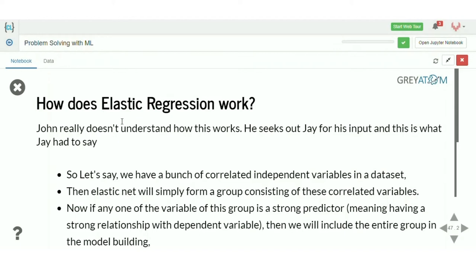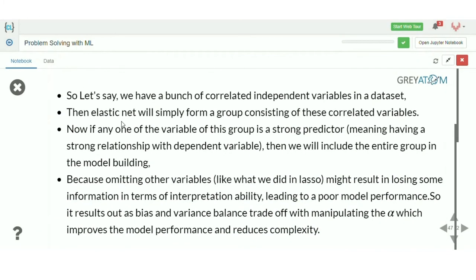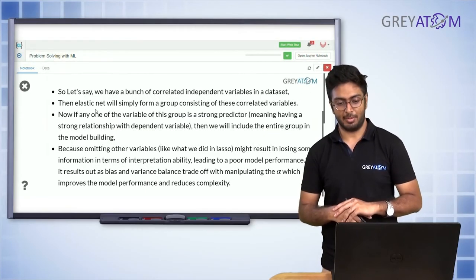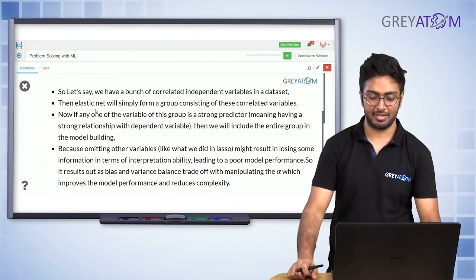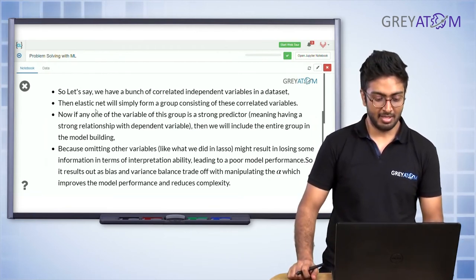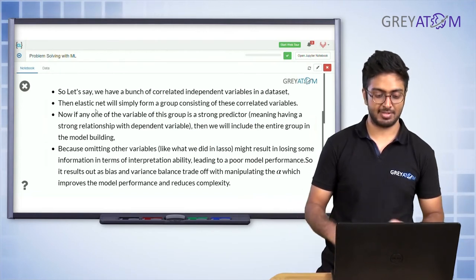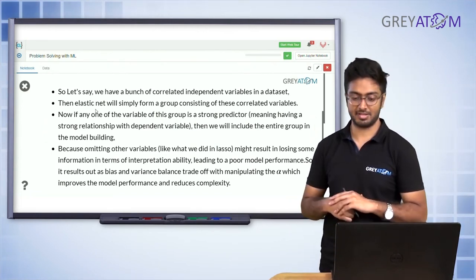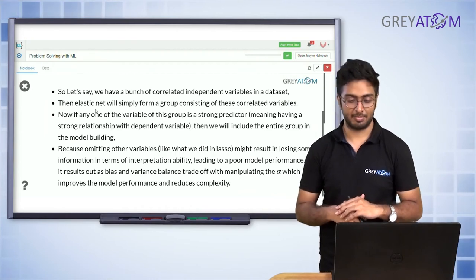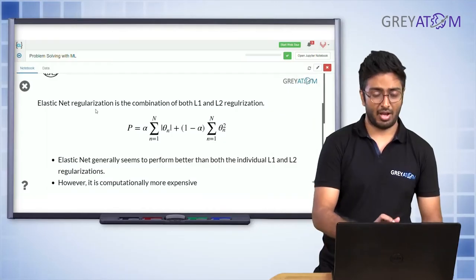So how does Elastic Net work? If we have a bunch of correlated independent variables in the dataset, Elastic Net will form a group consisting of those correlated variables. Now if any one variable in the group is a strong predictor, then we include the entire group in the model, because omitting the other correlated variables as Lasso does can result in loss of information.